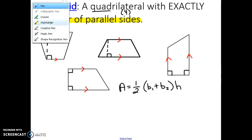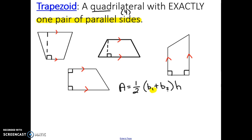Please make note on your note sheet that the little one and the little two are not exponents. You can think of them as telling you the difference between the bases — base one is the short base and base two is the long base. So the little one and little two are not numbers involved in your calculations.